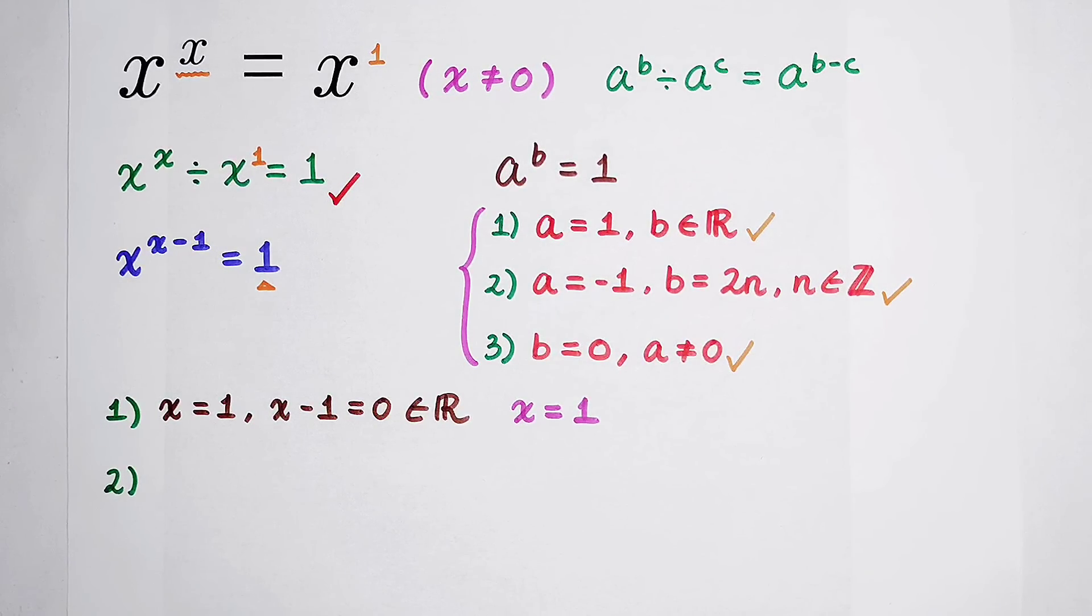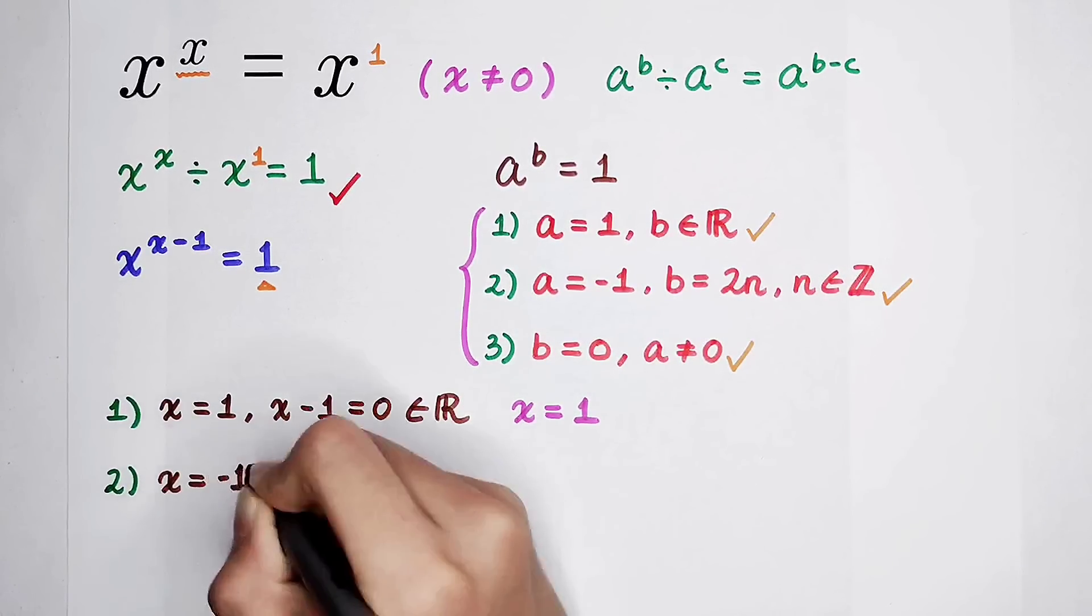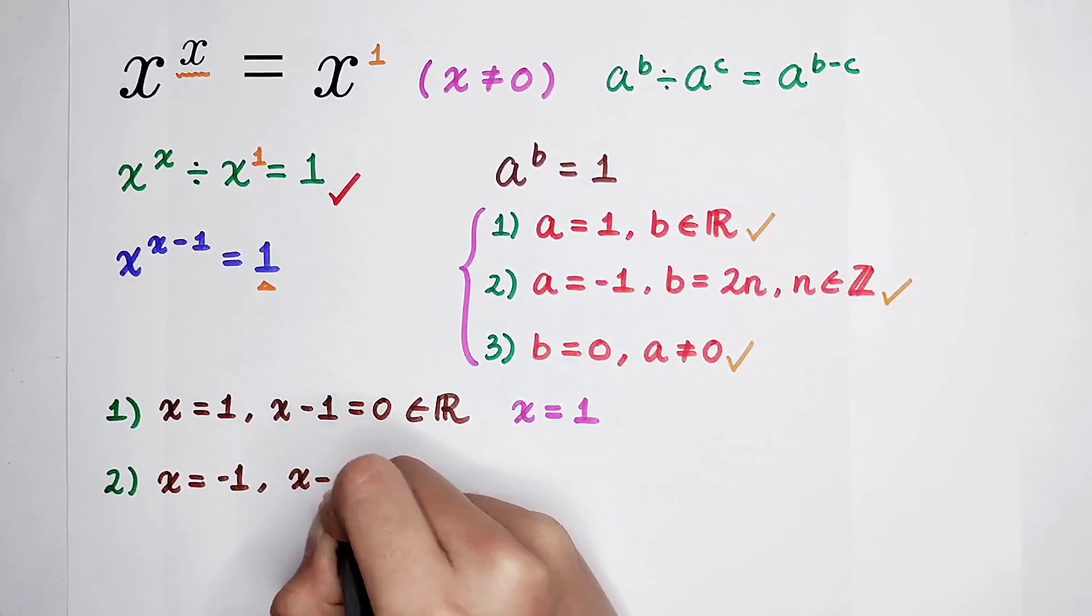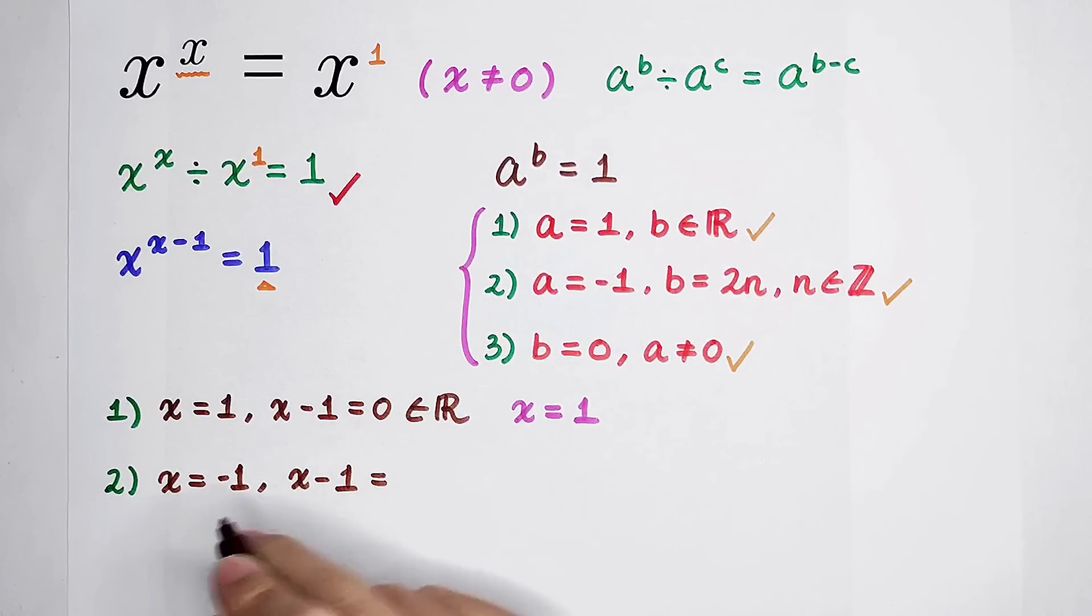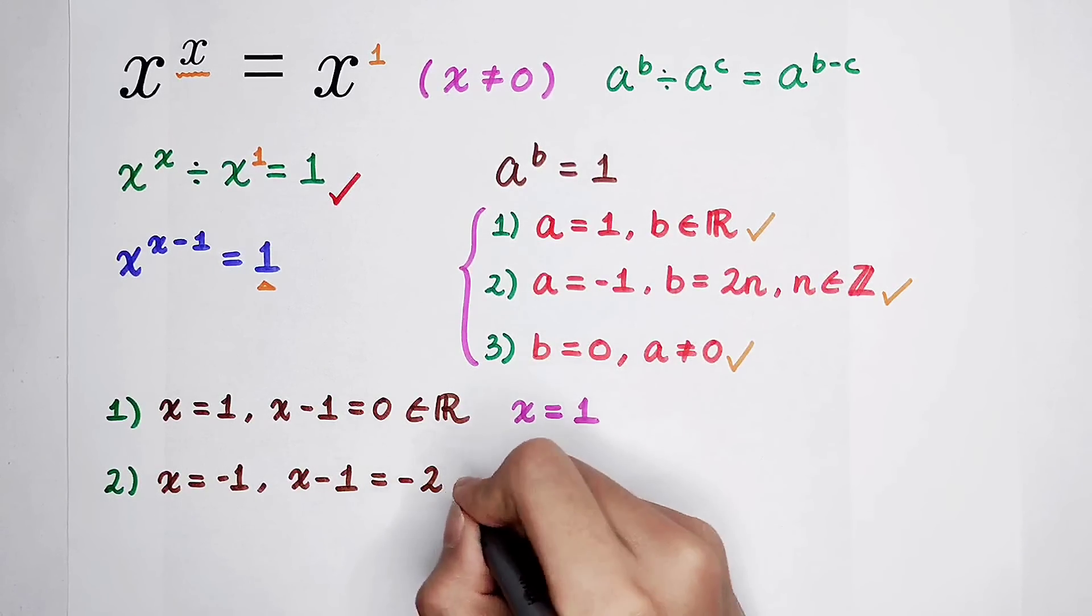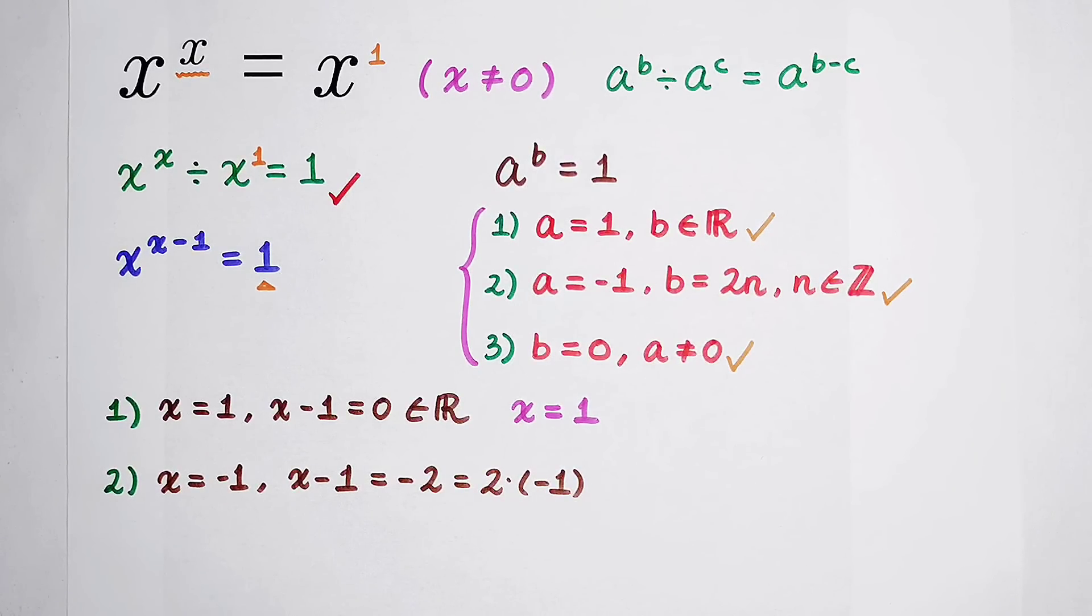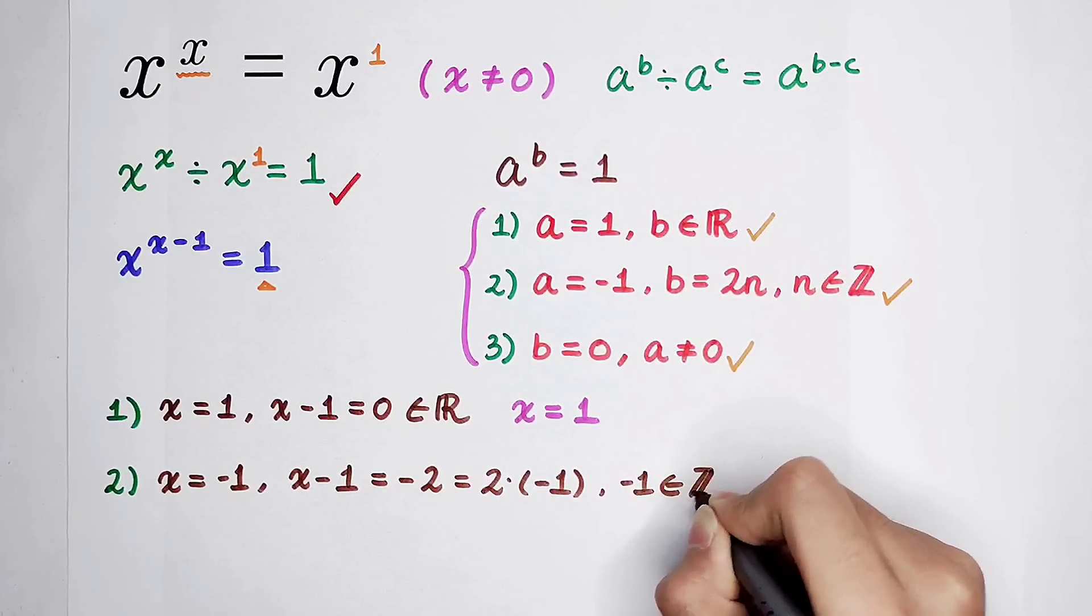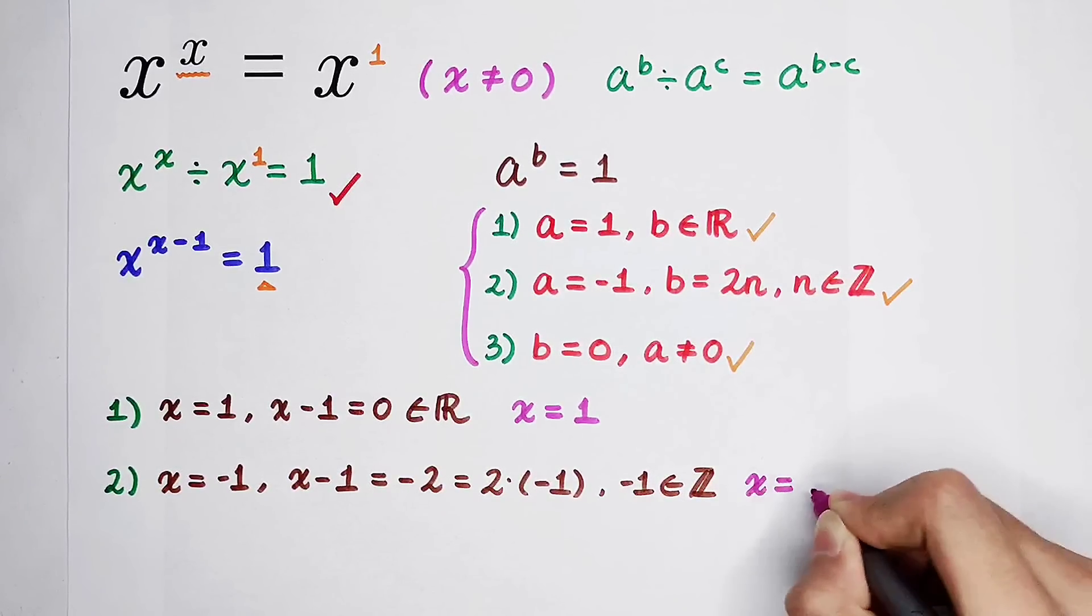For the second case, if a, in this case is x, is negative 1, and then x minus 1, is it an even number? I don't know. Negative 1 minus 1 is negative 2. It can be written as 2 times negative 1, and negative 1 is an integer. So in this case, there is a root: x is equal to negative 1.